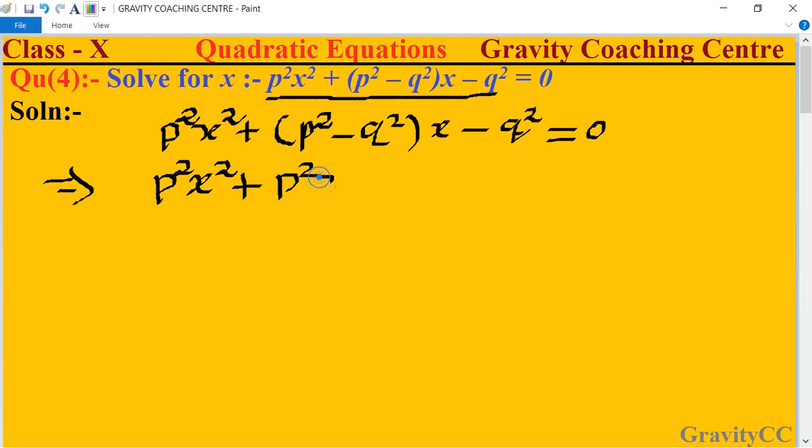This implies that first we take p²x as a common from first two parts. p²x, so the remaining portion is x + 1, and take minus q² from second two parts.